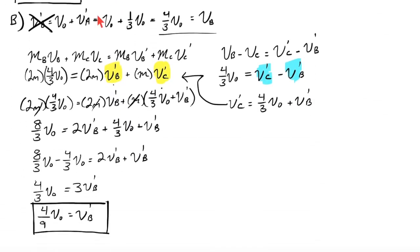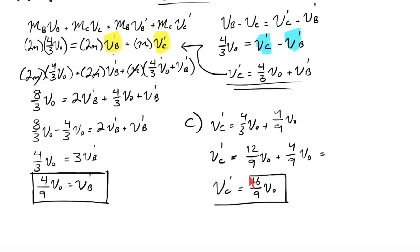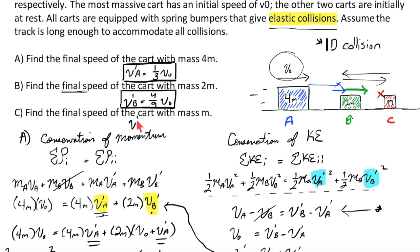the last part isn't too hard. All we need to do to figure out part C is to go back to this equation here, which relates the final velocity of object C to the final velocity of object B. V prime of C will be equal to 4 thirds V zero plus V prime of B, 4 ninths of V zero. Just a little bit of fractional arithmetic here. We will have 12 ninths of V zero plus 4 ninths of V zero. Final answer, V prime of C is actually equal to 16 over 9 V zero. Here we go. V prime of C, 16 over 9 V zero.